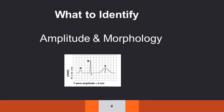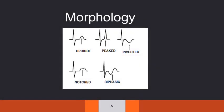So what to identify in T waves? Amplitude and morphology. The amplitude is measured in millimeters from the baseline to the peak of the T wave. Morphology abnormalities could be either upright T wave, peaked T wave, inverted T waves, notched T waves, and biphasic T waves.